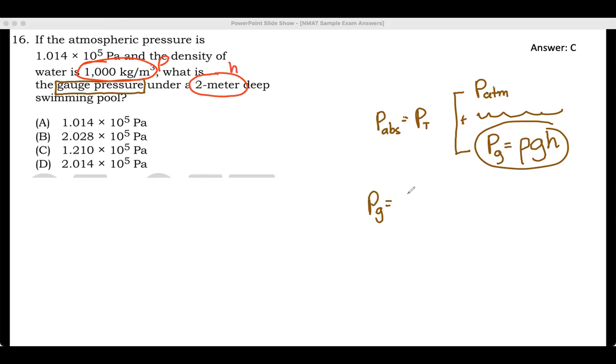So the density is 1,000 times gravity. Let's say gravity is 10, let's make it 10 meters per second squared. So 10 times the height, which is 2.